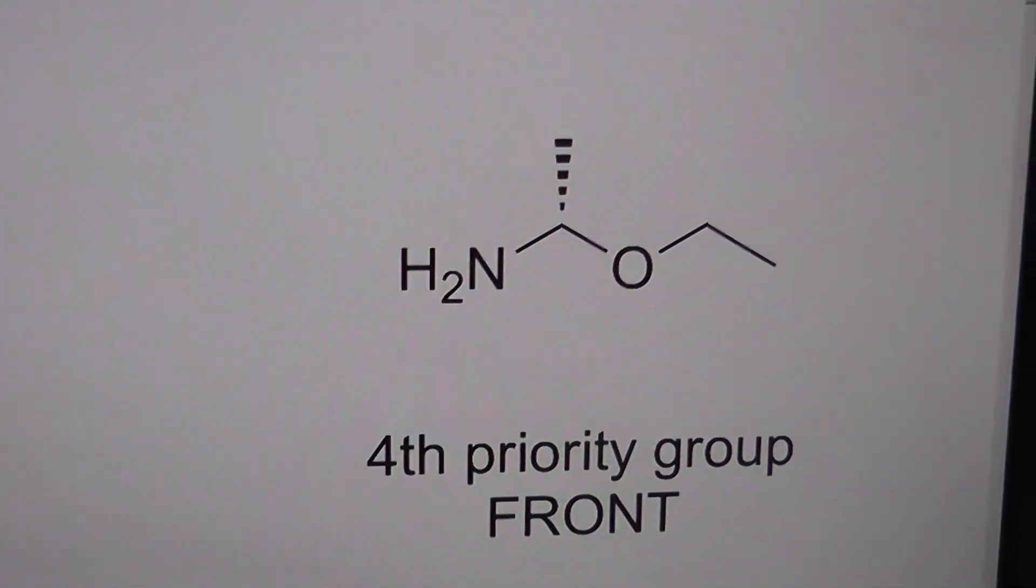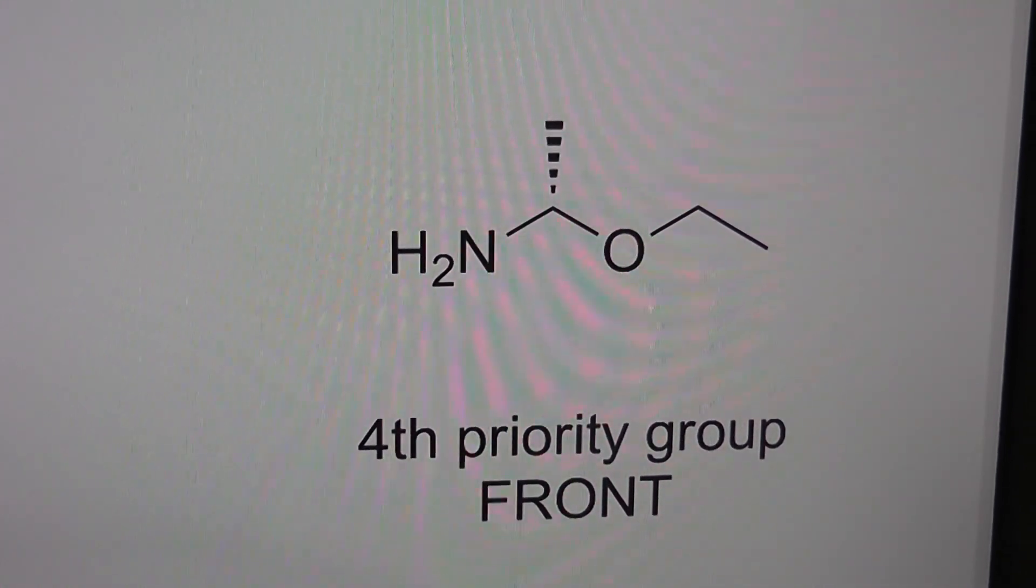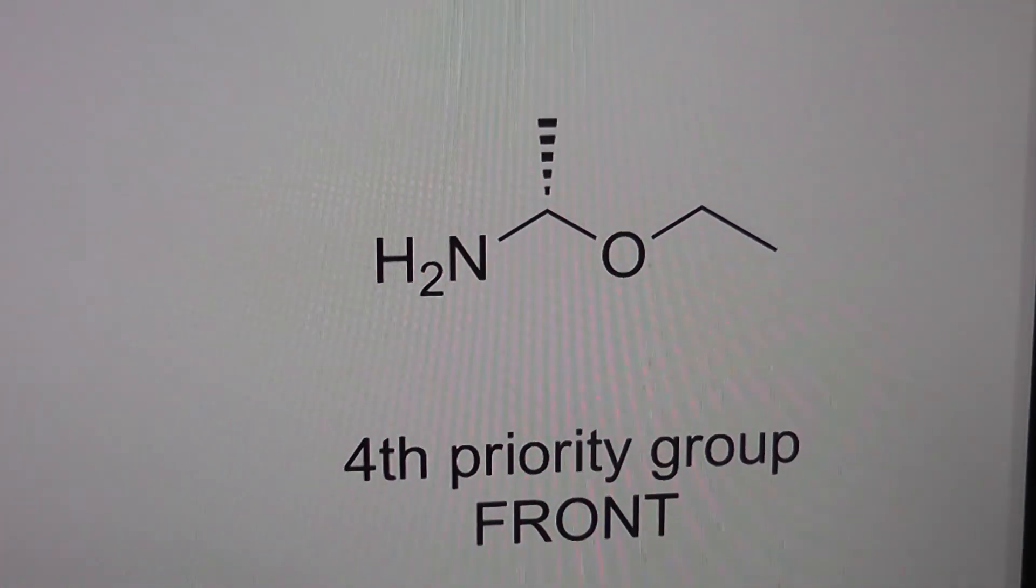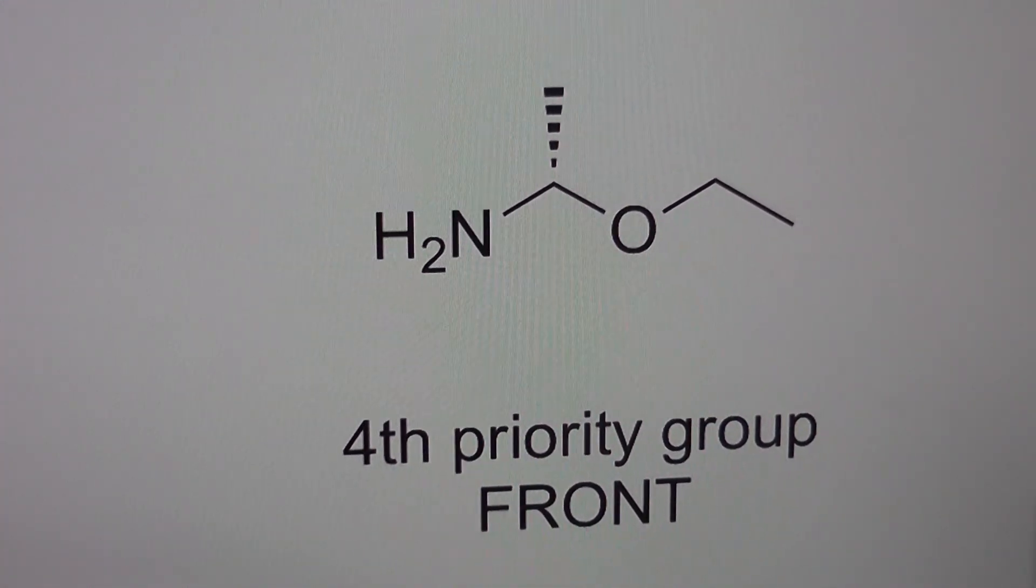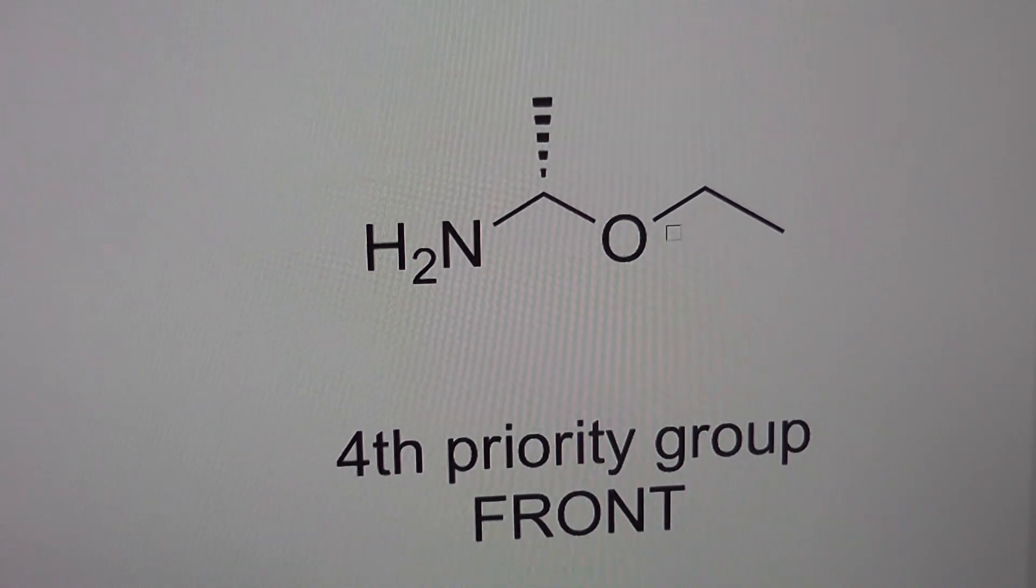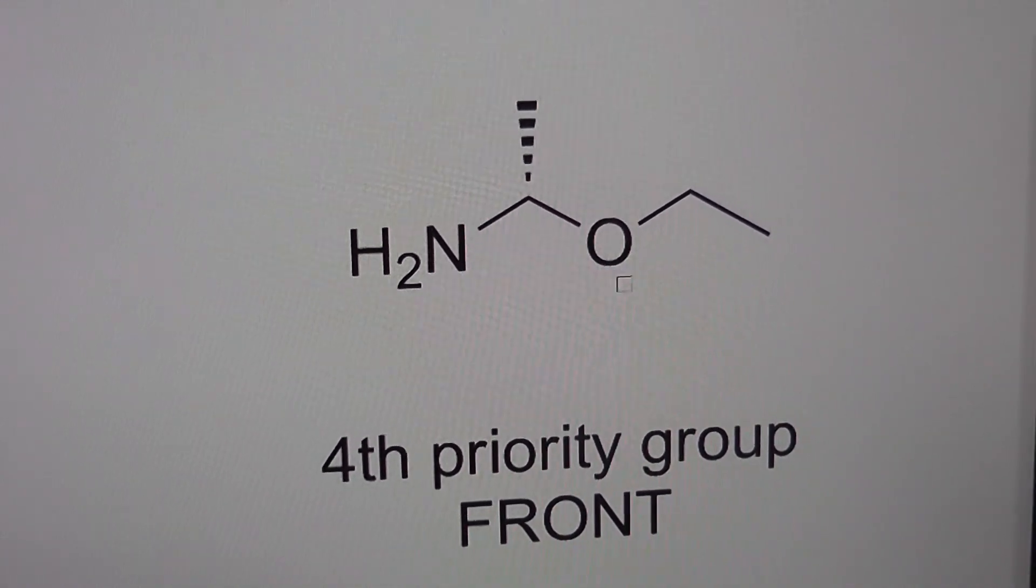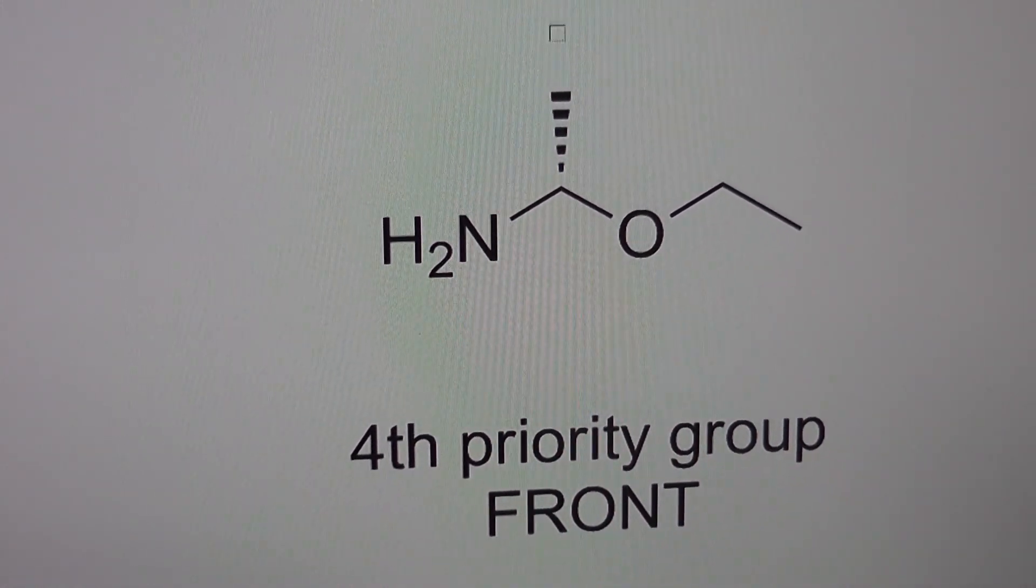One possibility is that we can just remember the fourth priority group is to the front. We look and see what is the pattern of rotation of the priority groups from one to two to three. So we see first priority group here, second priority group here, third priority group here.